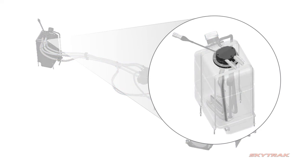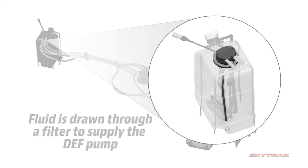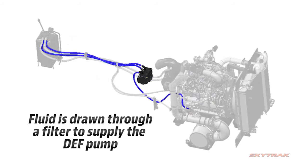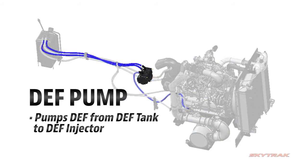The DEF header also includes a tube extending near the bottom of the tank where the fluid is drawn through a filter to supply the DEF pump. The DEF pump circulates DEF to and from the tank via insulated DEF lines. These lines are electrically heated by the engine ECM in cold conditions to prevent DEF from freezing in the lines.